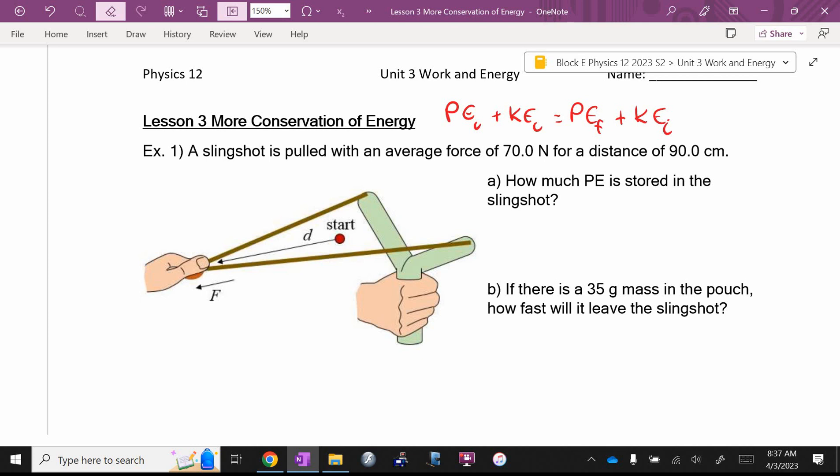Now, kinetic energy is a half mv squared. Potential energy, Eliana, that just means stored energy. Usually it's MGH, but not always, and a good example is a slingshot or a bow and arrow.